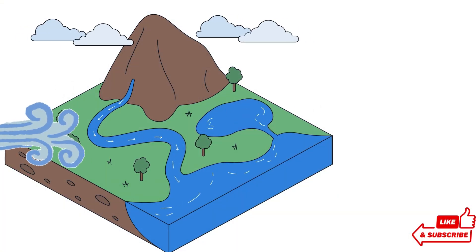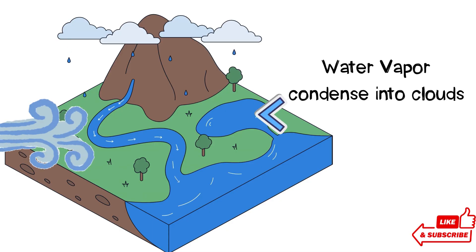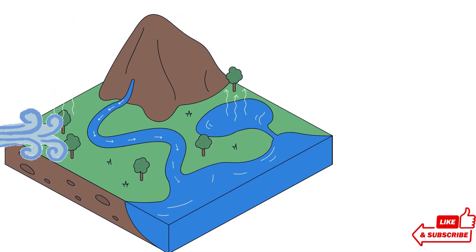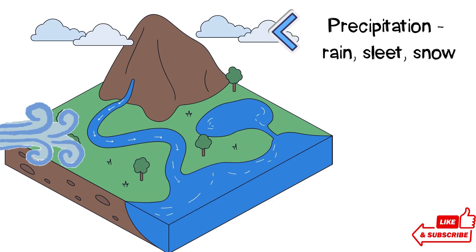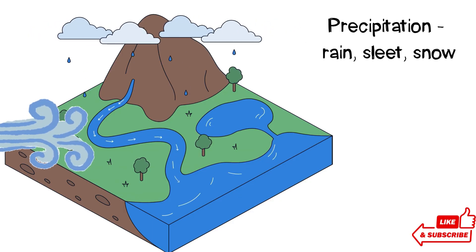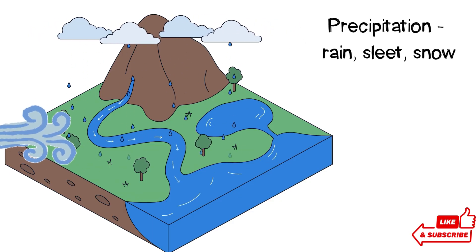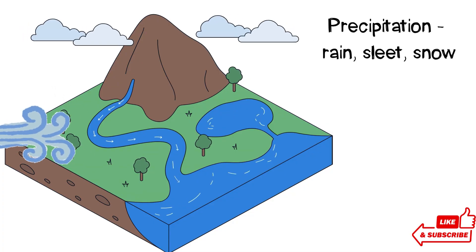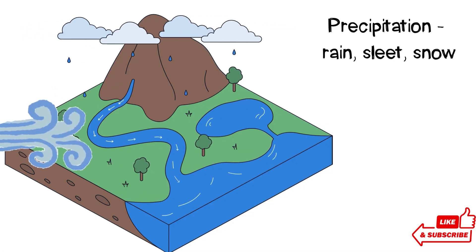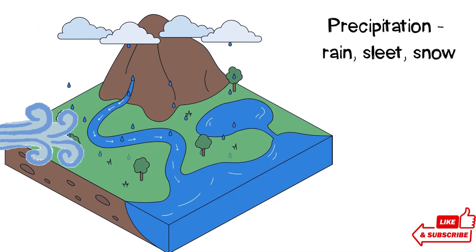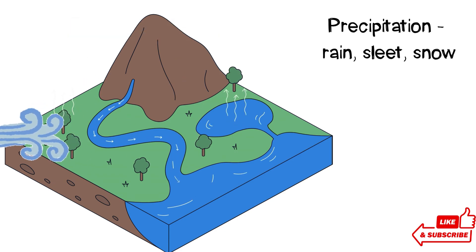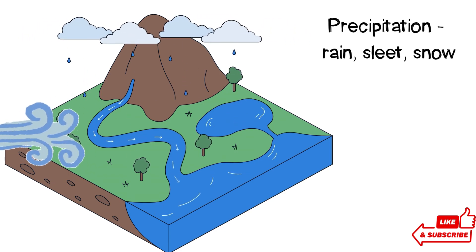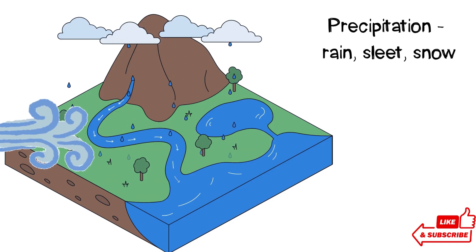As warm moist air rises, it cools and condenses into tiny droplets. These droplets form clouds. When these droplets join together and get very heavy, rain or snow falls back to the earth as precipitation. This process doesn't just make weather — it moves heat and moisture around the planet, shaping our climate.